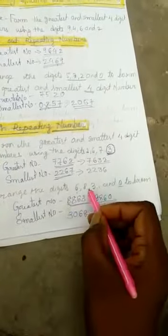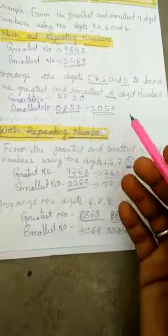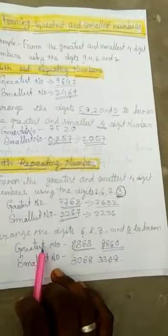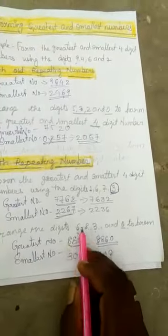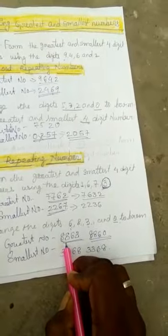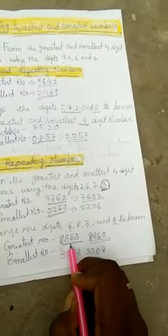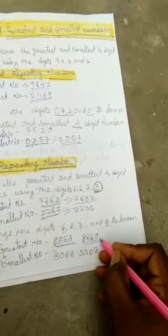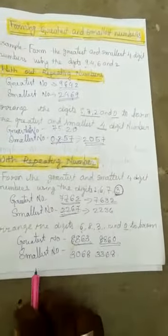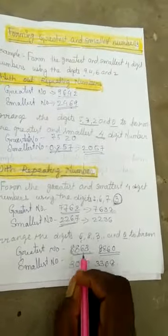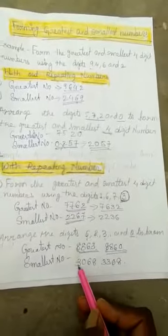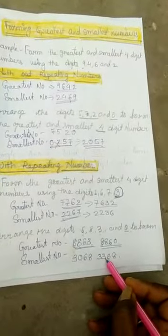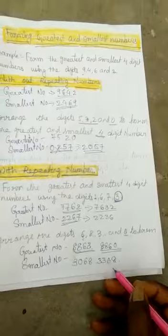Now you learn. Arrange the digits 6, 8, 3, and 0, same type of question. Remember 0 is valueless in the leading position. For the greatest number using repeating: 8 is the greatest, so 8863. For the smallest number, since 0 is valueless, the smallest is 3068. If repeating, you can write 3368.